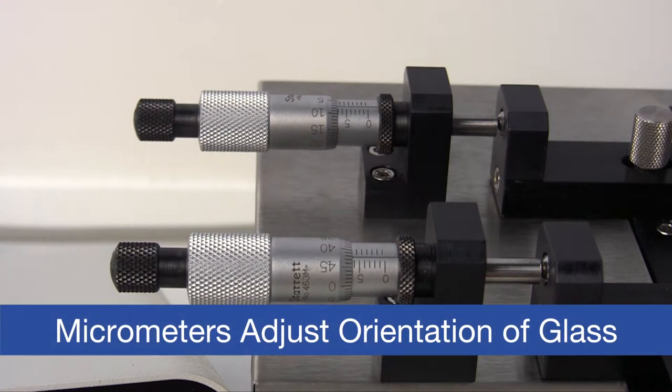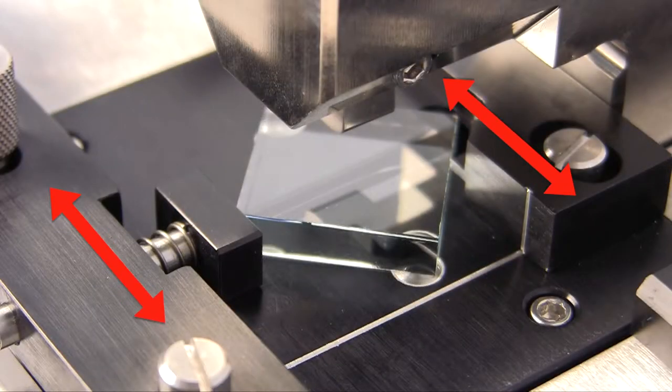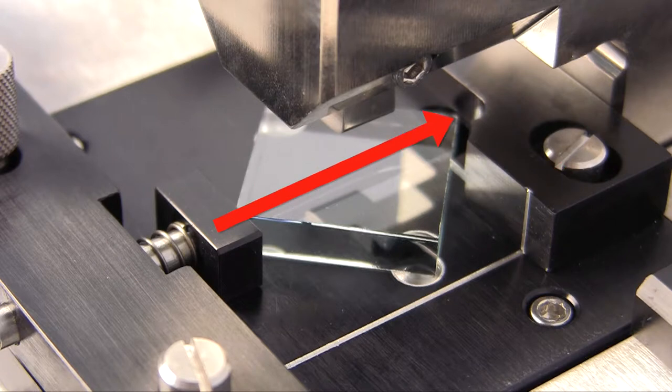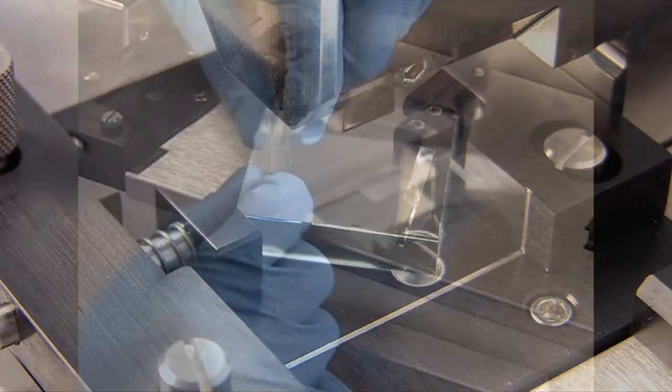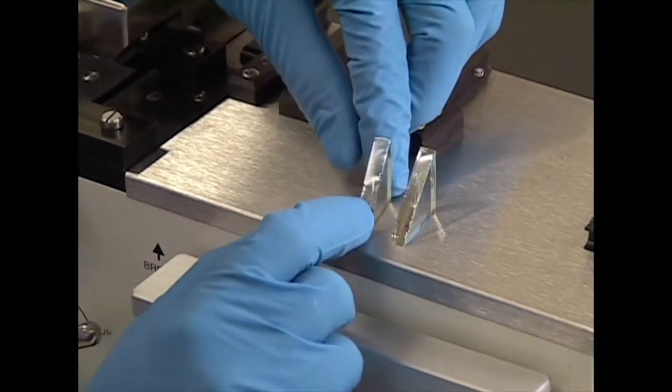The design also includes two micrometers, which adjust the orientation of the glass square relative to the scoring wheel to optimize the knife angle for a variety of techniques. RMZ Beckler senior scientist Greg Becker explains.